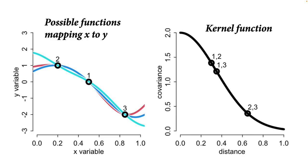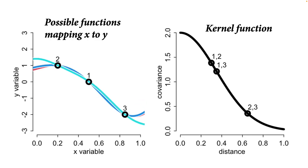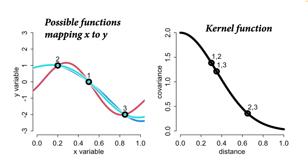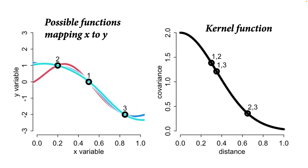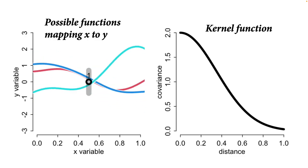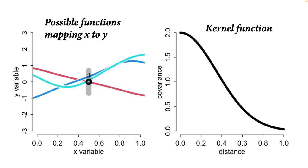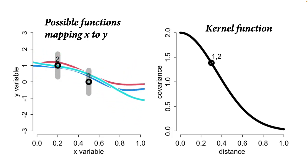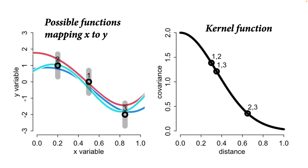Every pair of points has an implied covariance shown on the right when I draw the 1-2, 1-3, and 2-3 distances. Making additional observations gives us information about unseen regions of the function, and the kernel function determines how free the function can be between known points. Usually when we observe a point we don't know it with certainty — there's often measurement error — so I've added gray regions showing how the unknown functions can wiggle around that point given measurement uncertainty.